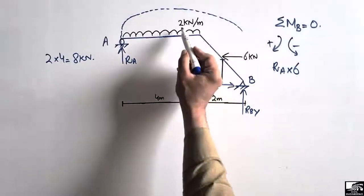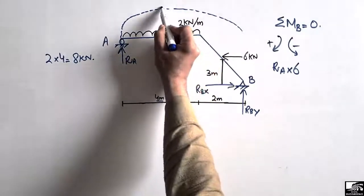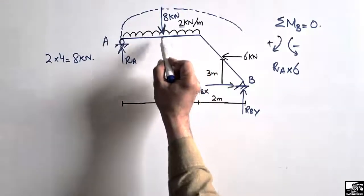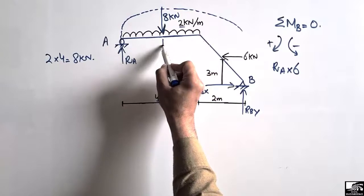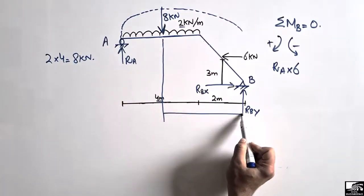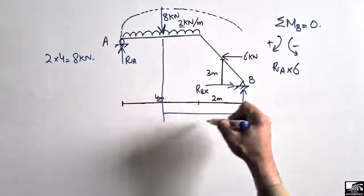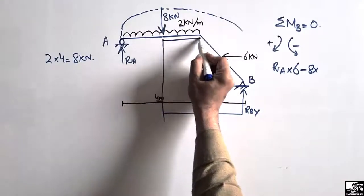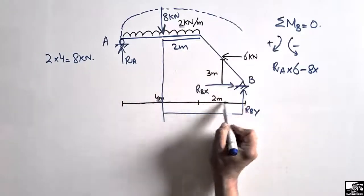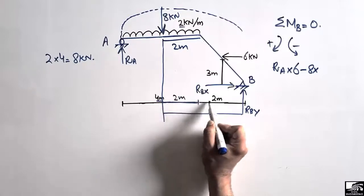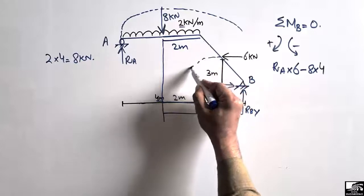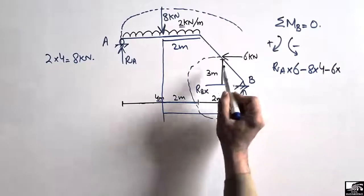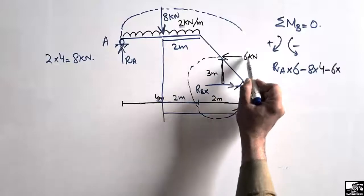The 8 kilonewton resultant acts at the center of the distributed length. This force creates a moment in the anti-clockwise direction about point B, so it is negative: 8 kilonewton multiplied by its moment arm. The moment arm is 2 meters (half of 4 meters) plus 2 meters, totaling 4 meters. The 6 kilonewton lateral load also creates an anti-clockwise moment about point B, so it is negative: 6 kilonewton multiplied by its perpendicular moment arm of 3 meters.